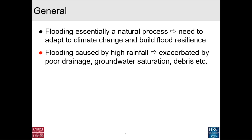One of the problems we face in the future is that flooding is caused by heavy rainfall, and this can be exacerbated by poor drainage — often dated drainage which doesn't cope with modern high rainfall intensities. Groundwater saturation and debris flow are additional problems. I recently served on a government committee, and the Met Office is predicting that rainfall intensity is going to increase by typically 30% over the next 30 to 40 years, as documented in a recent report. So what we think of as high rainfall intensity now is likely to get worse.